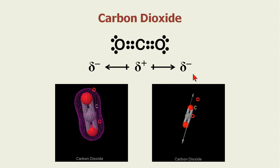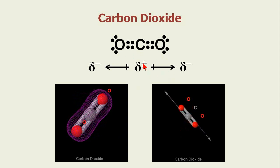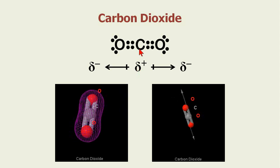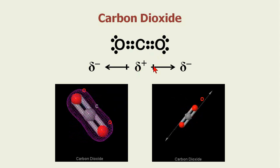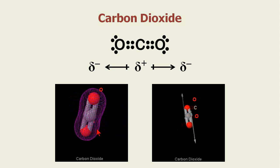So it goes from positive to negative. On this side, it does the same thing. You can look at it as a linear molecule with carbon in the middle, oxygen which is more electronegative on each end.